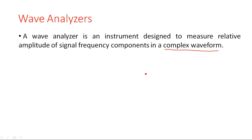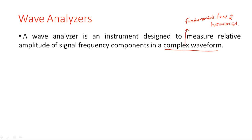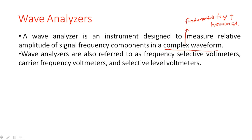A complex waveform is a waveform that consists of a fundamental frequency component plus harmonics. Harmonics are generally unwanted signals, and because of this, some distortion is present in the signal. If any signal has both a fundamental frequency component and harmonics, we call it a complex waveform. For such waveforms, the amplitudes are calculated using the wave analyzer.